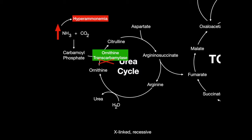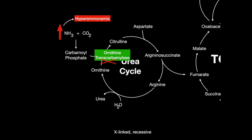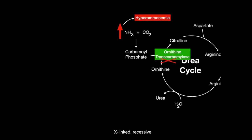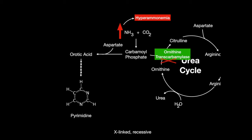It is an X-linked recessive disorder. Instead of carbamoyl phosphate joining with ornithine to make citrulline, carbamoyl phosphate will join with aspartate to create orotic acid, which is used in pyrimidine synthesis. Patients with this deficiency are found with high levels of orotic acid in the urine and blood, and decreased levels of blood urea nitrogen, with symptoms of hyperammonemia.